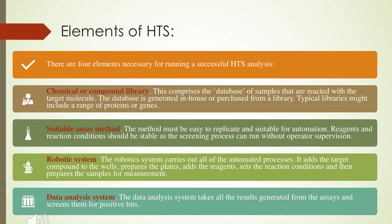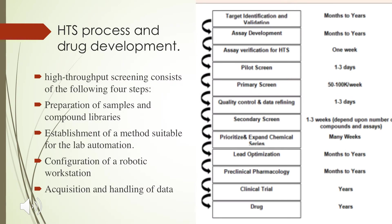All the reagents and reactions should be stable because the screening process may be done without supervision. We can use robotic systems — the robotic system carries out all automated processes like adding target compounds to wells, preparing plates, and adding reagents. The last element is the data analysis system: whatever results are generated from the assay are screened for positive hits. In summary, the four major steps are: preparation of samples or compound library, establishing a suitable method for lab automation, configuring a robotic workstation, and acquisition and handling of data.